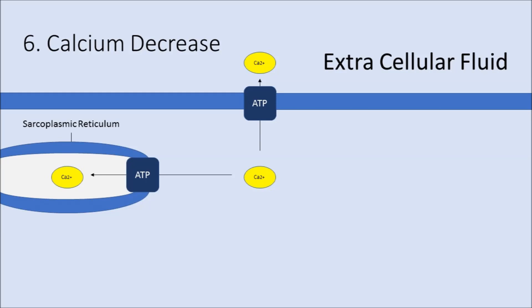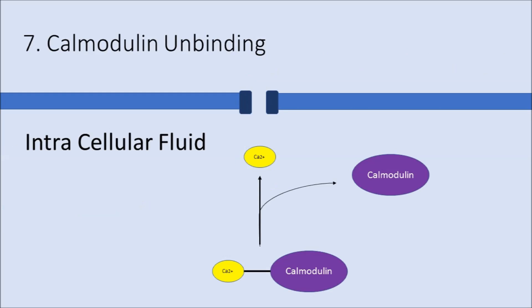Now once the muscle is done contracting, the cell is signaled to start releasing calcium and this release will start the process of relaxation. The calmodulin then releases from calcium.